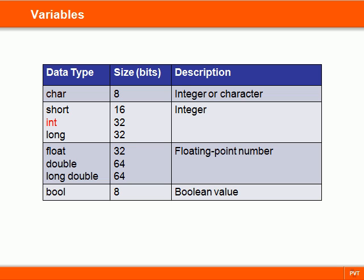The general specification is that the int type will have the same size as the system word. So for a 32-bit system where the smallest addressable unit is 8 bits, the integers will be 4 bytes long.